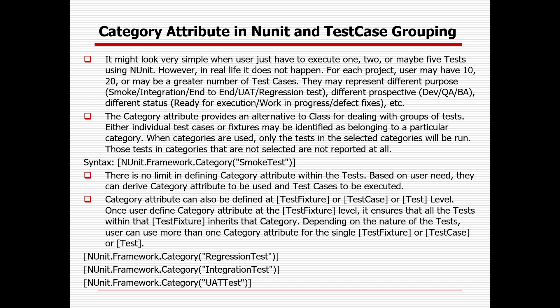Different perspectives like dev, QA, BA, different status classes — ready for execution, work in progress, or defective, etc. The category attribute provides an alternative to class for dealing with groups of tests. Either individual test cases or fixtures may be identified as belonging to a particular category. When categories are used, only the tests in the selected categories will be run. Those tests in categories that are not selected are not reported at all.